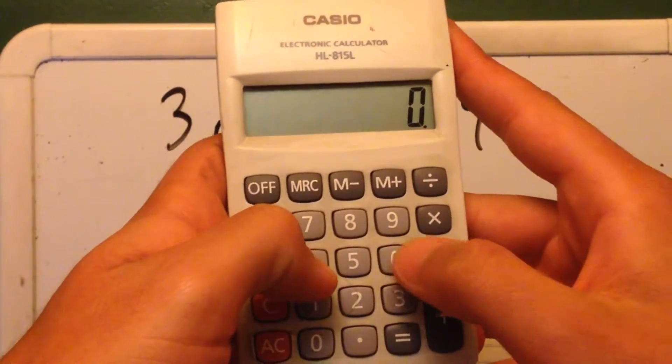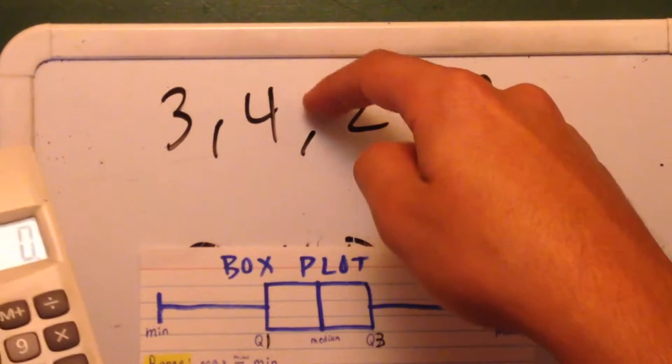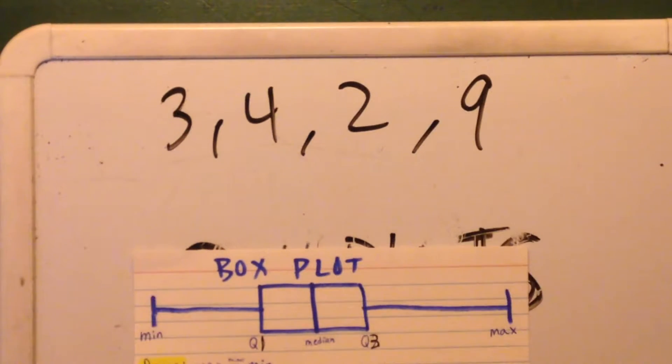So you're just going to add 4 plus 2 and divide by 2. So that's going to be 4 plus 2 is 6 divided by 2. And so our median is 3. It's not there, but that's what's going to happen when you have an even set of numbers.